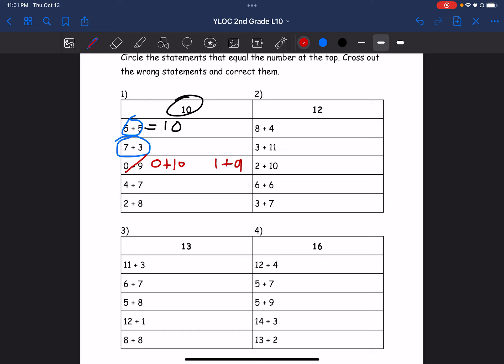And then 4 plus 7, that equals 11, so we have to cross that out and make it 4 plus 6 or 3 plus 7. And then 2 plus 8 does equal 10 so we circle it.